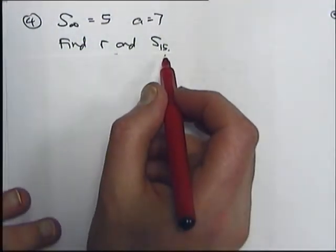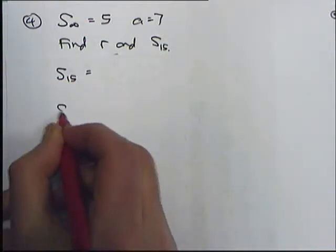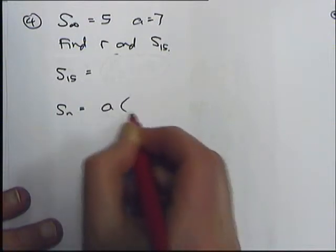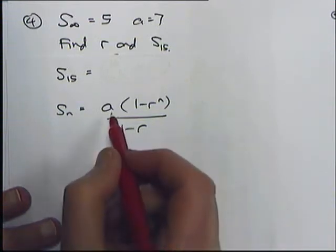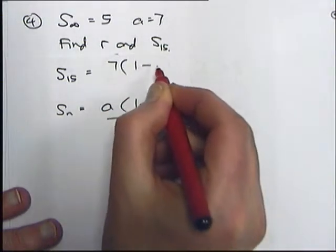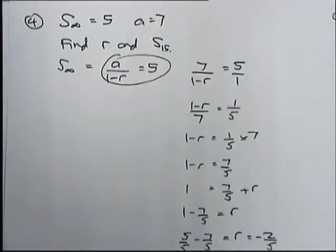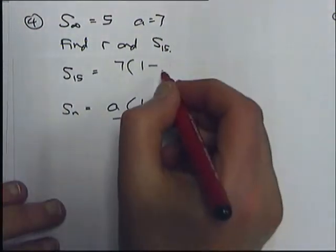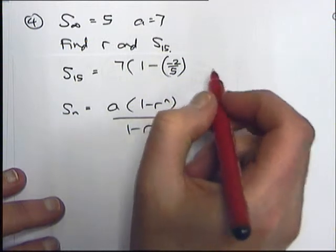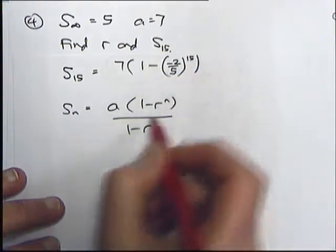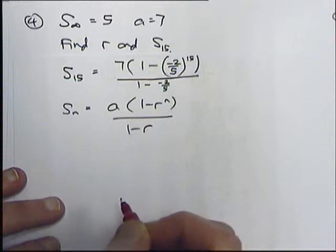The second thing I had to do was find the sum of the first 15 terms. Using the formula where the sum of the first n terms is a times (1 minus r to the n) over (1 minus r). I know a is 7, and r is minus 2 fifths. So I've got 1 minus (minus 2 fifths) to the power of 15 on top, divided by 1 minus r, where r is minus 2 fifths, on the bottom.